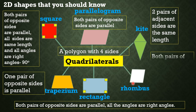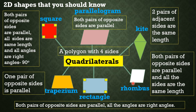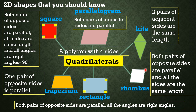And lastly, a rhombus. A rhombus has both pairs of opposite sides that are parallel and all the sides are the same length. A rhombus has two pairs of opposite sides and they are parallel. All the angles are not 90 degrees — they are not right angles — and all the sides are the same length.